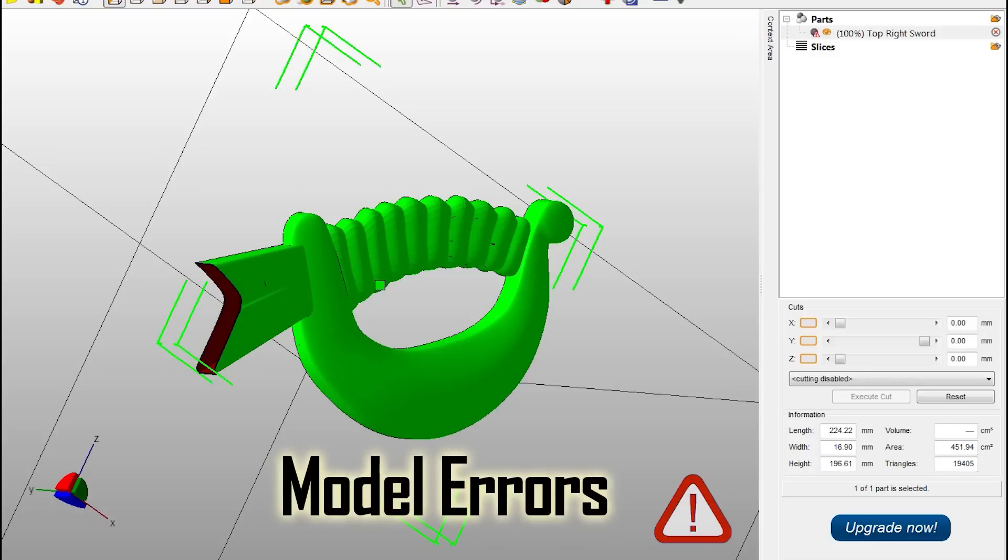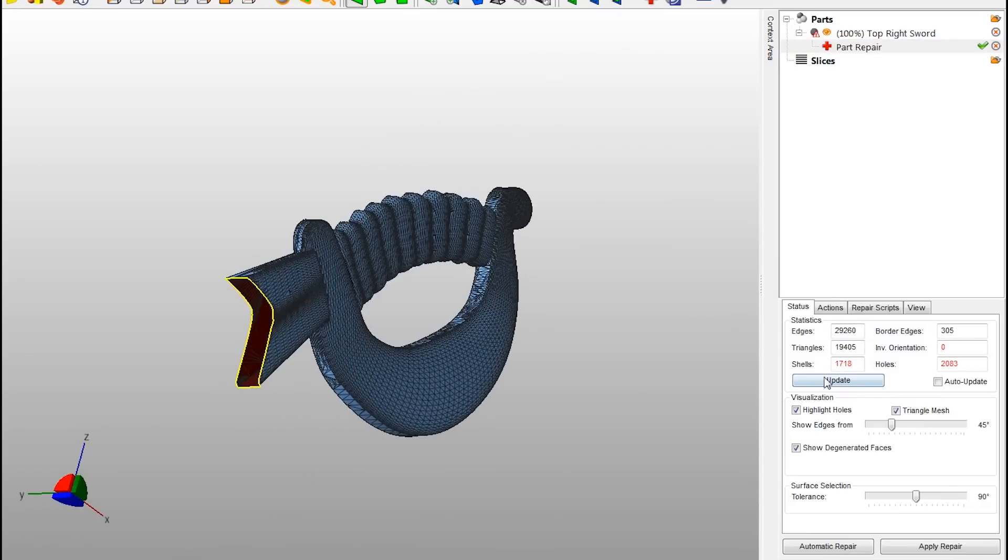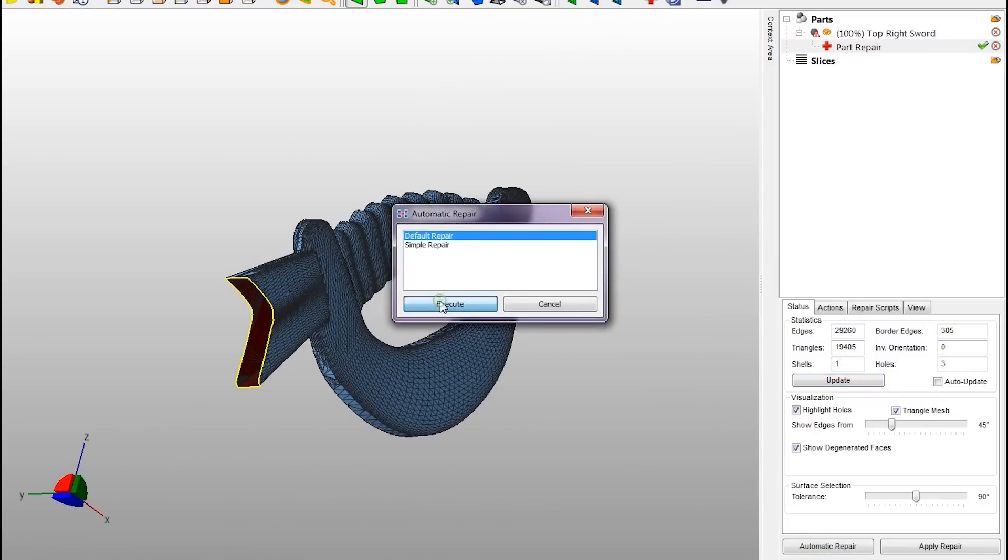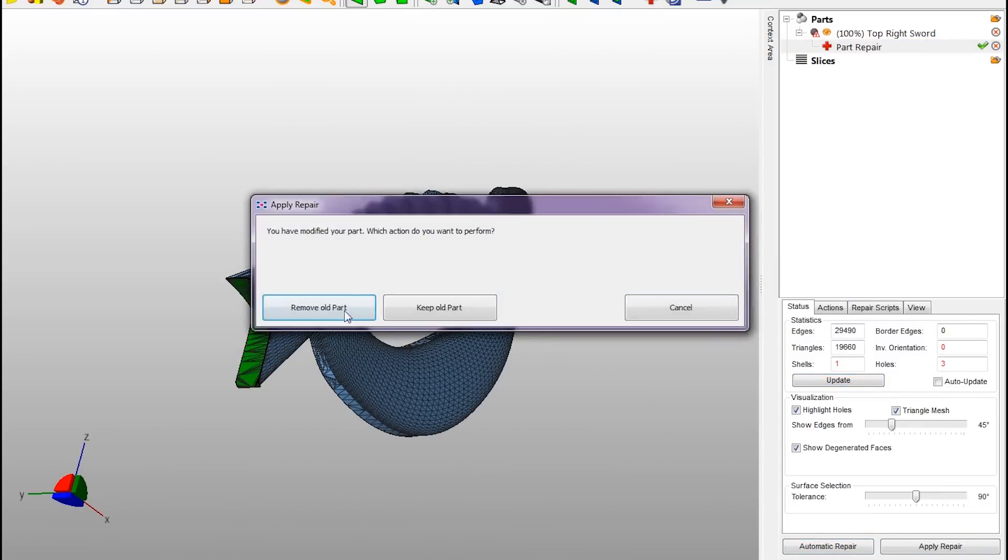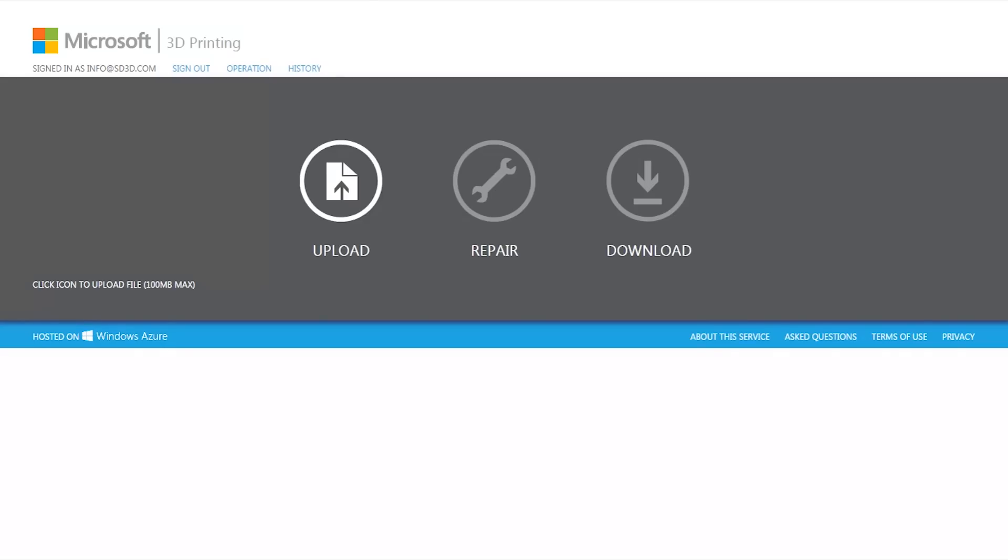Model errors. 3D models can often look great to the naked eye, but they will not print properly at all. This is because they were either combined incorrectly, exported improperly, or had some other issue that cannot be explained. You can determine if your model has errors by either downloading software such as NetFab, or running it through NetFab's model correction tool online. If these corrections are not fixed, we will not be able to print your part.